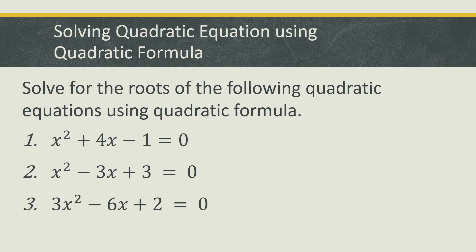For example, number 1: x squared plus 4x minus 1 is equal to 0. This is an example of an equation which is not factorable. Number 2: x squared minus 3x plus 3 is equal to 0. And number 3: 3x squared minus 6x plus 2 is equal to 0. They all cannot be factored.